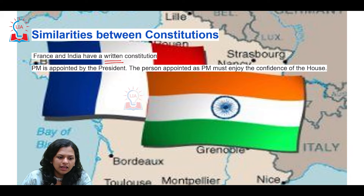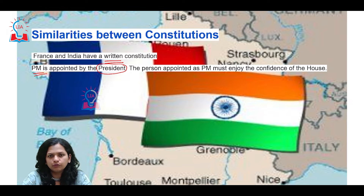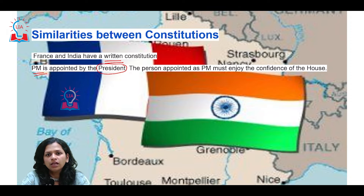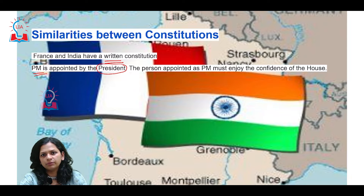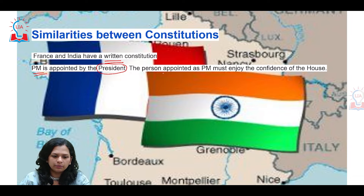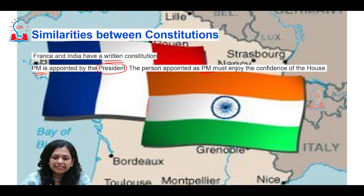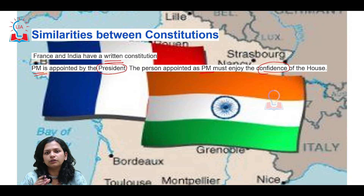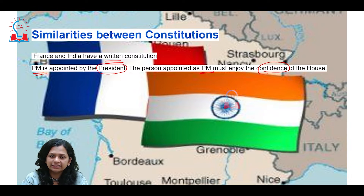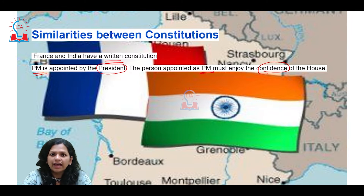In both countries, the prime minister is appointed by the president. In India, which has a parliamentary form of government, the real power lies with the prime minister, and the president appoints the prime minister based on the majority party. Similarly in France, the person appointed as prime minister needs to enjoy the confidence of the house. Having the support and confidence of the house, representing democratic ideals, is an important similarity between the Indian and French constitutions.